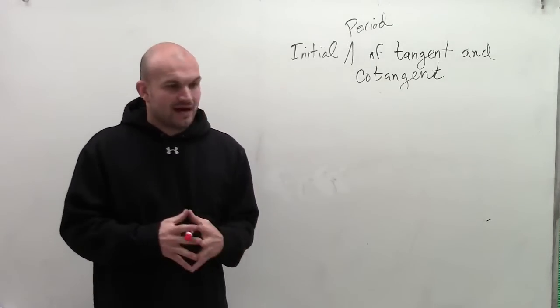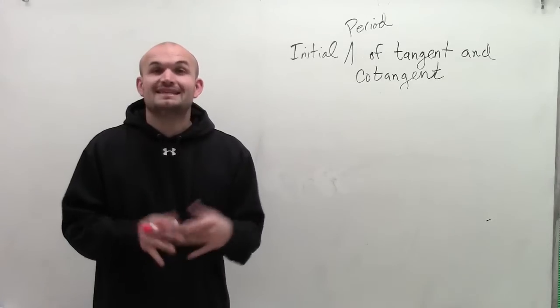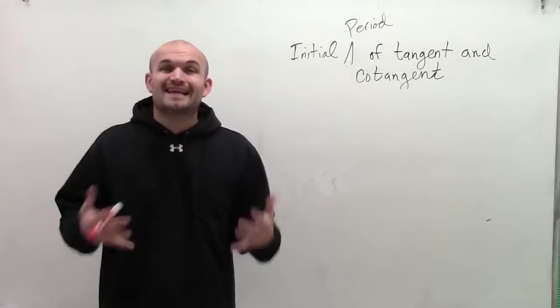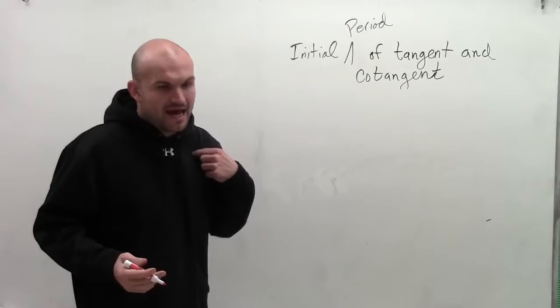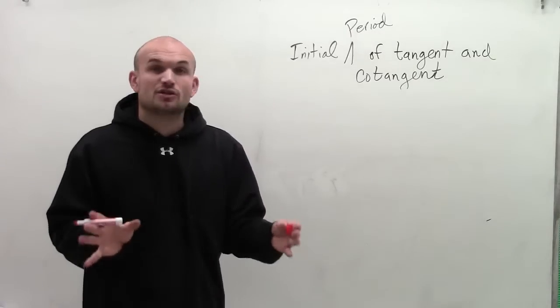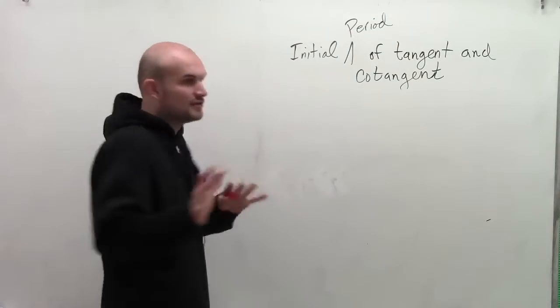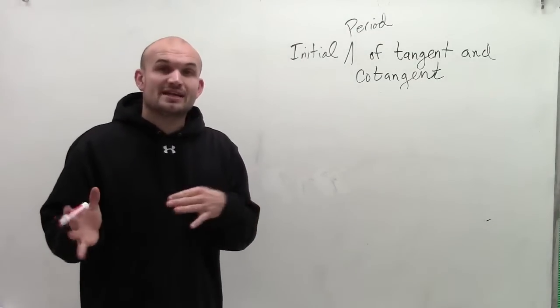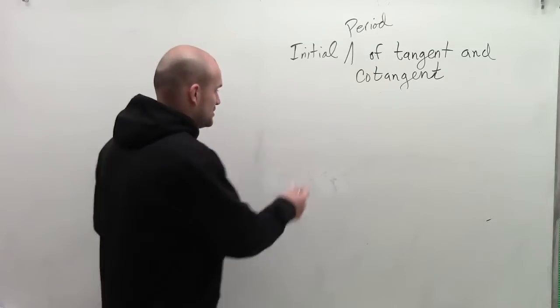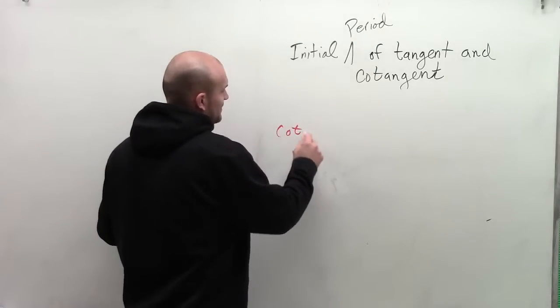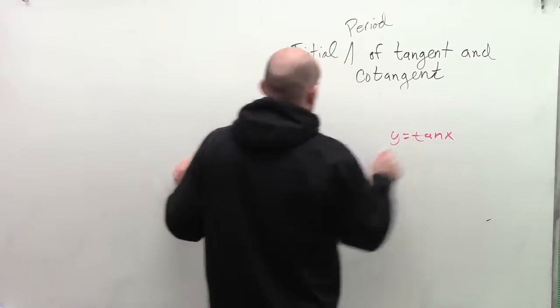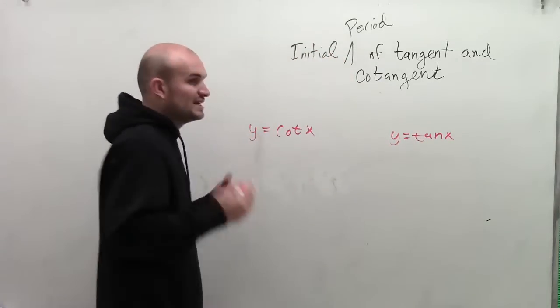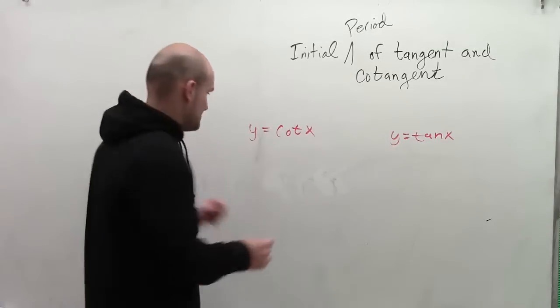So what we need to do now is determine how we find the initial period, the start and the end of our graph. So let's take a look here at the two graphs and see how they're going to be similar and different from each other. So what I'll do is I'll just graph the cotangent function and the tangent function.